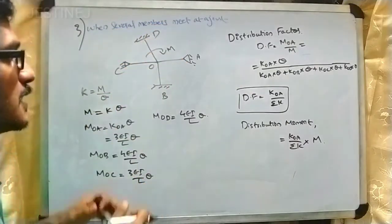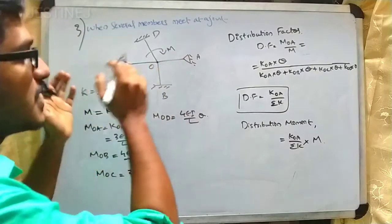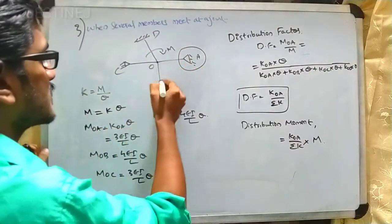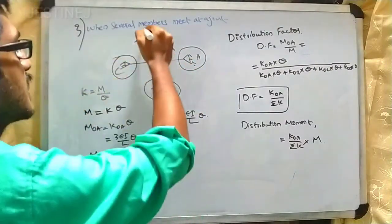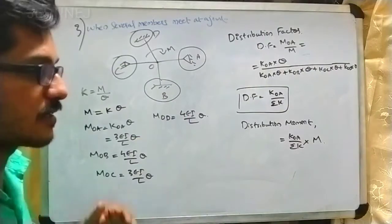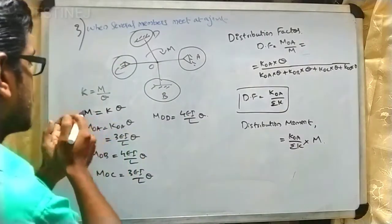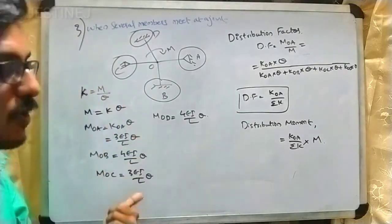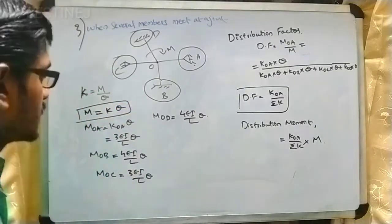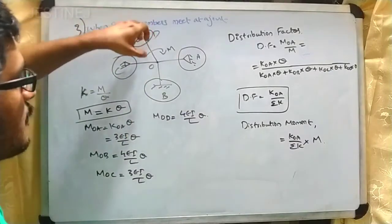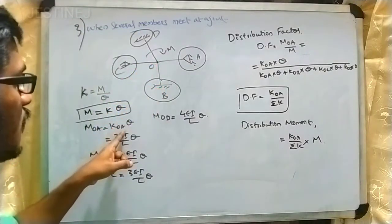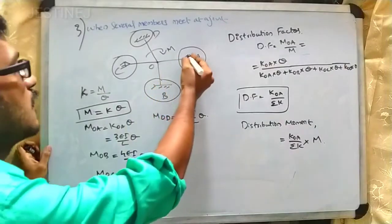Now the last case: when several members meet at a joint connected to various supports — simply hinged, fixed, hinged, and fixed. We will determine the distribution moment and distribution factor. Stiffness is the applied moment to the unit rotation, so M = K·θ.